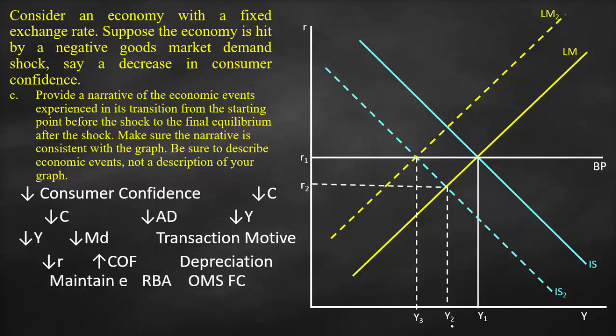Since we have a fixed exchange rate, the central bank buys up the excess supply of domestic currency in order to maintain the nominal exchange rate. The resulting reduction in money supply causes interest rates to rise. This higher interest rate leads to lower investment and lower output even further. The interest rate is pushed back up so that there is no net investment increase to compensate for the fall in consumption.